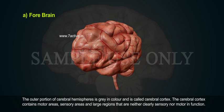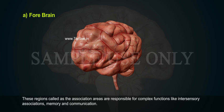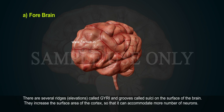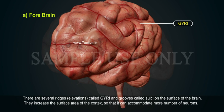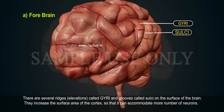The cerebral cortex contains motor areas, sensory areas and large regions that are neither clearly sensory nor motor in function. These regions, called association areas, are responsible for complex functions like intersensory associations, memory and communication. There are several ridges called gyri and grooves called sulci on the surface of the brain. They increase the surface area of the cortex so that it can accommodate more number of neurons.